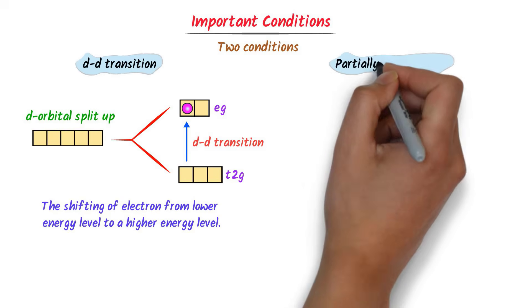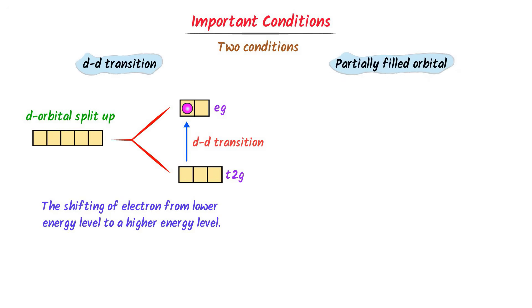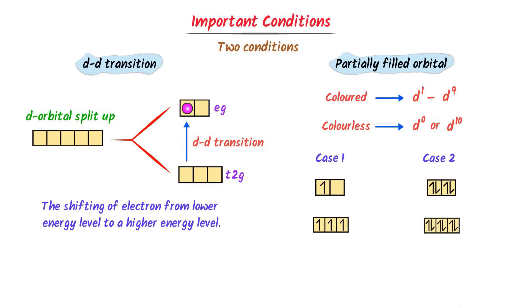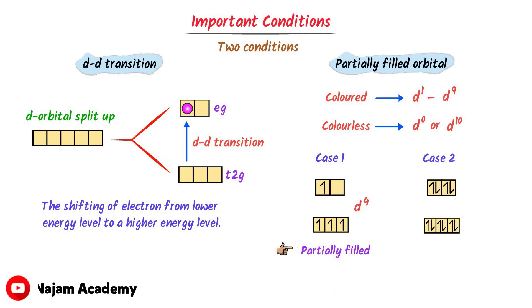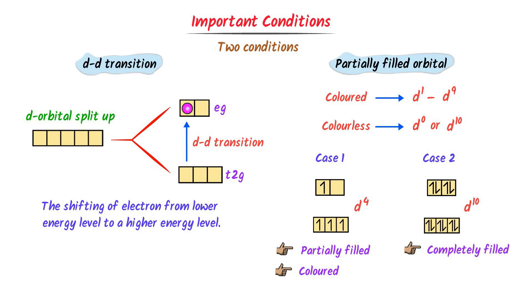The second condition is partially filled orbitals. Coordination compounds are colored if their d-orbitals have 1 to 9 electrons, while coordination compounds are colorless if their d-orbitals have 0 or 10 electrons. For example, in the first case the d-orbitals are partially filled with 4 electrons — d-d transition is possible, hence this coordination compound is colored. In the second case, d-orbitals are completely filled with 10 electrons — d-d transition is not possible, hence this compound is colorless.